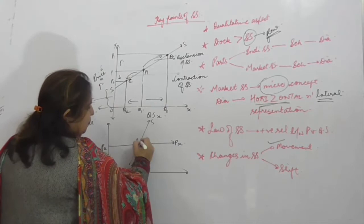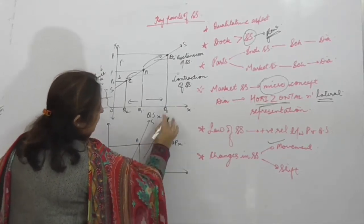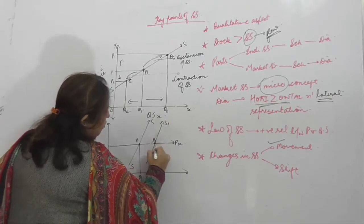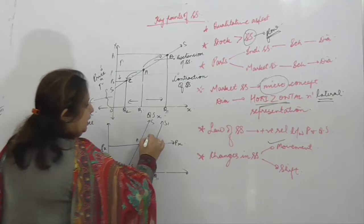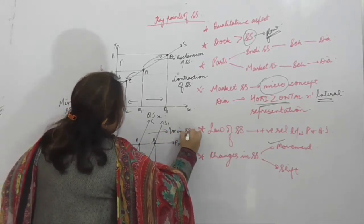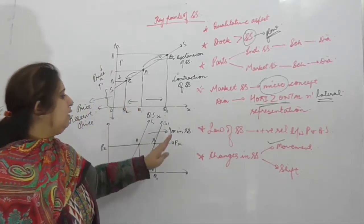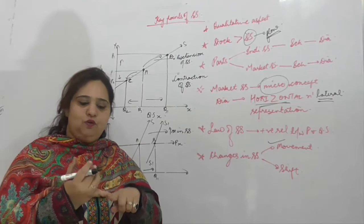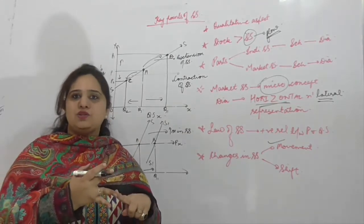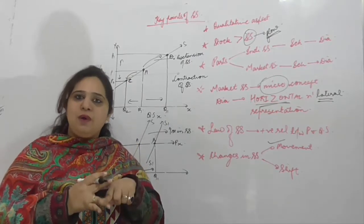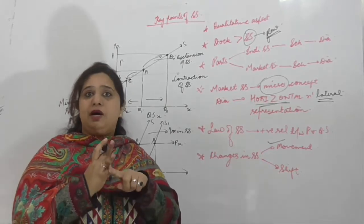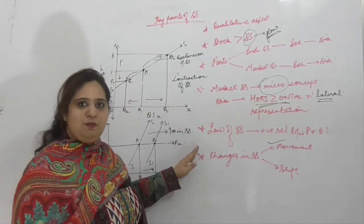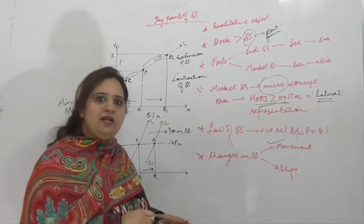At a given price, quantity OQ — अगर supply curve rightward shift होता है, new supply curve S1S1 — A से B position — quantity supplied increase हो जाती है OQ से OQ dash। This is known as Increase in Supply। Supply curve original position छोड़कर rightward shift क्यों होगा? Price of a substitute good decreases, technology improves, taxes का rate कम हो, prices of factors of production कम हों, goals shift from profit maximization to sales maximization, या subsidies बढ़ें।